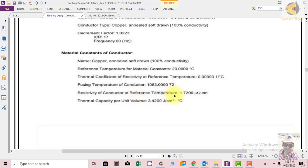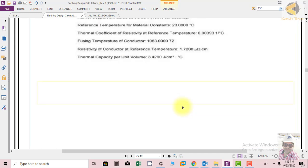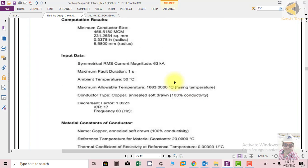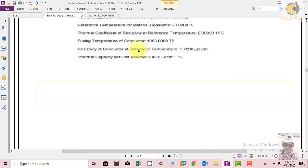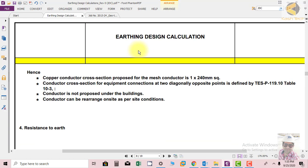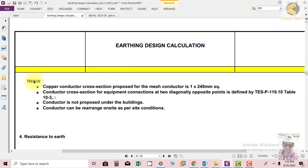Fusing temperature we have already mentioned. Resistivity of conductor at reference temperature is 1.7 micro ohms per centimeter. Thermal capacity per unit is 3.42 joules per centimeter cube per degree centigrade. These are the results. We need a conductor of minimum 230 square mm.